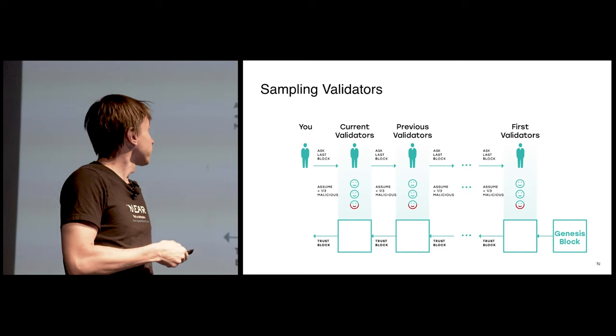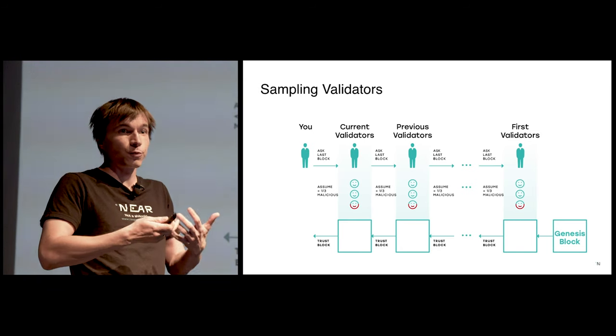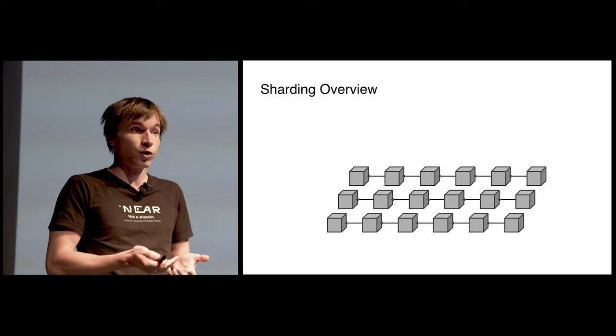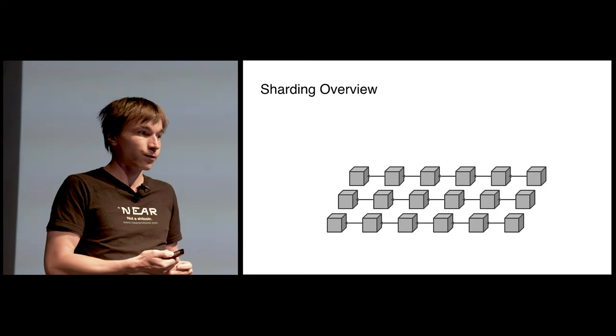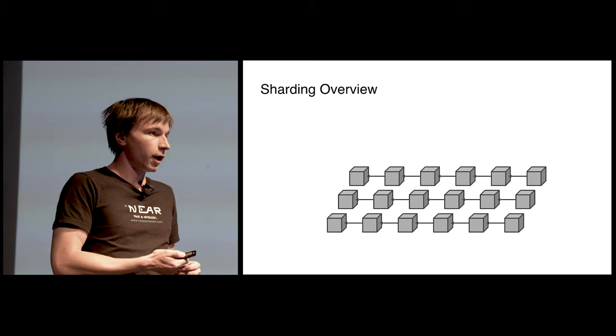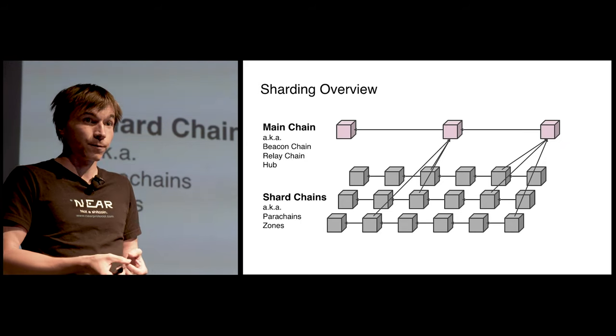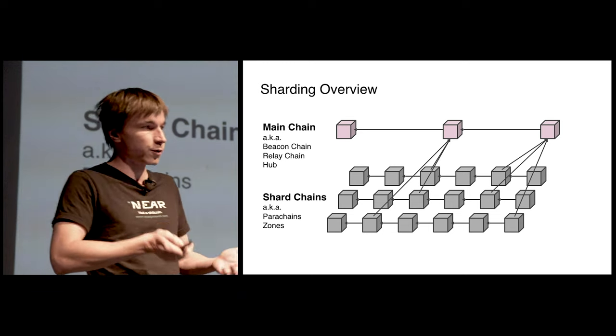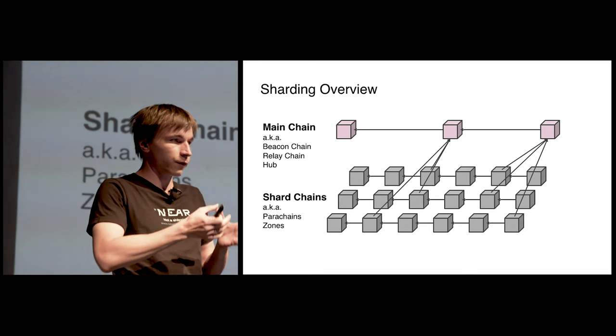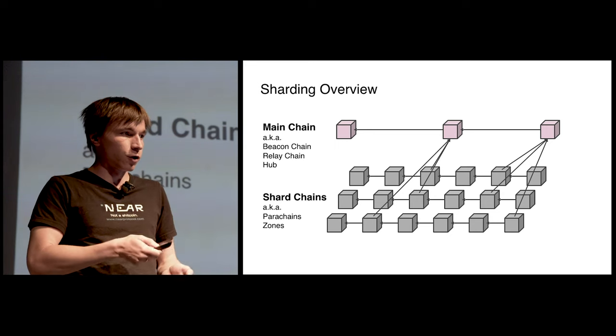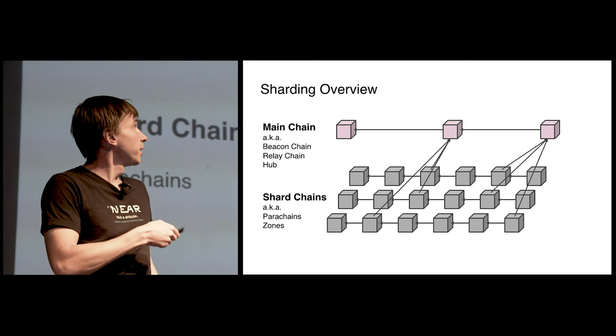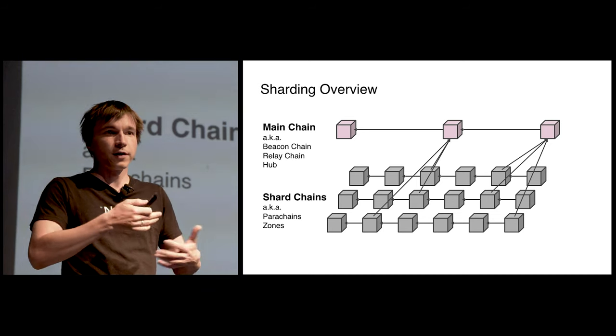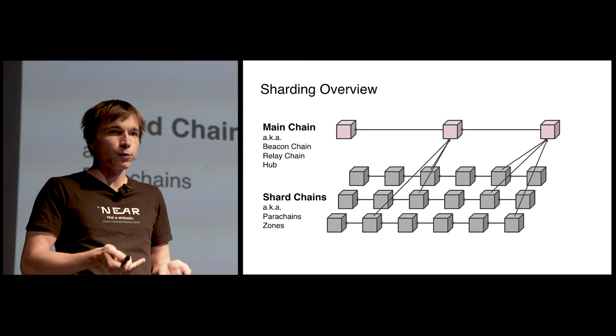But there's one problem which is choosing those validators. That should be a secure computation. That computation should happen on chain. But we don't have a chain, we have multiple chains. Which chain is responsible for actually rotating the validators? The most common solution to that problem is to have one blockchain to rule them all. In Ethereum it is called the beacon chain. In Polkadot it's called relay chain. We will be referring to it as main chain throughout the presentation. So that chain, everybody validates it. The shard chains, the validators are split among them. But the main chain, everybody validates it. And the main chain's primary responsibility is to rotate the validators, assign them to shards and do some other computations which are global to the entire system.